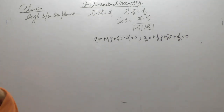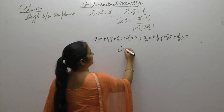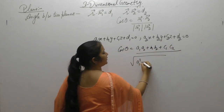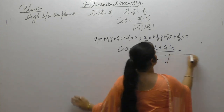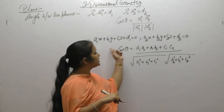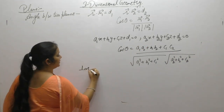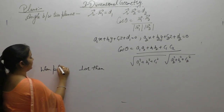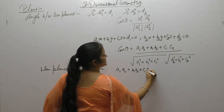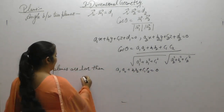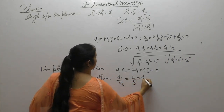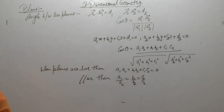When the Cartesian form is given, the angle between them is A1A2 plus B1B2 plus C1C2 upon square root of A1 squared plus B1 squared plus C1 squared, into square root of A2 squared plus B2 squared plus C2 squared. When these two planes are perpendicular, the condition is A1A2 plus B1B2 plus C1C2 equals 0. And when these two planes are parallel, the condition is A1 upon A2 equals B1 upon B2 equals C1 upon C2.